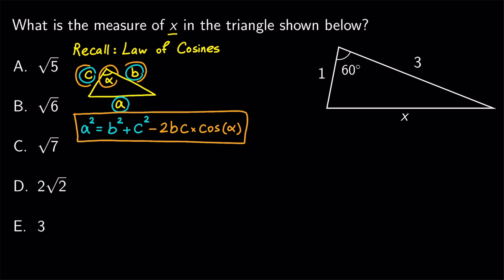Now, let's apply the law of cosines to solve this problem. We want to find x, so we get x squared equals three squared plus one squared minus two times three times one times cosine of 60 degrees.